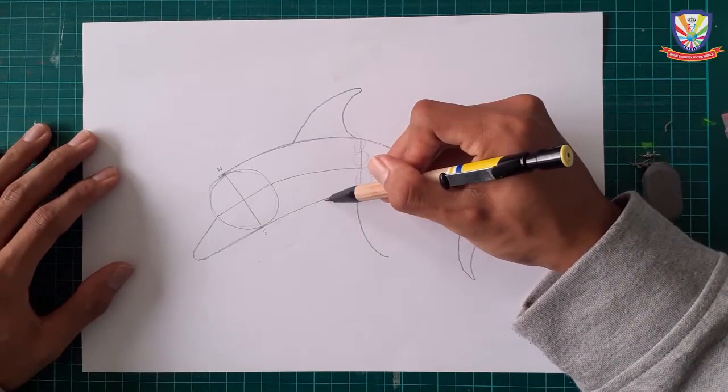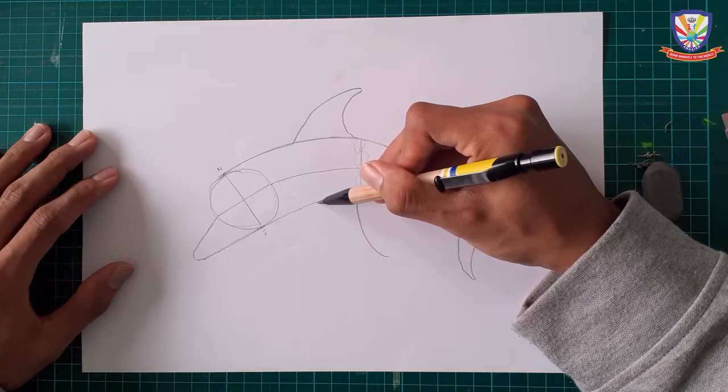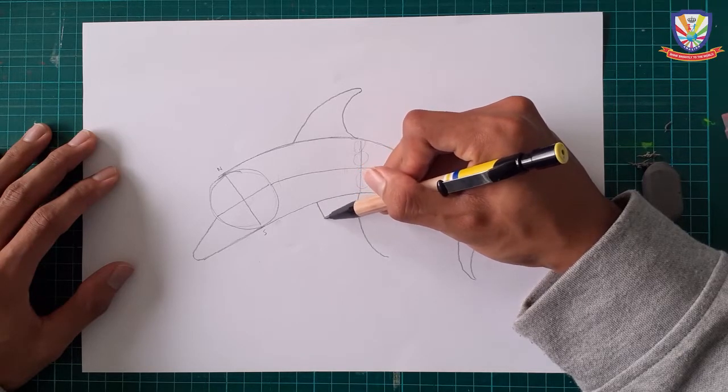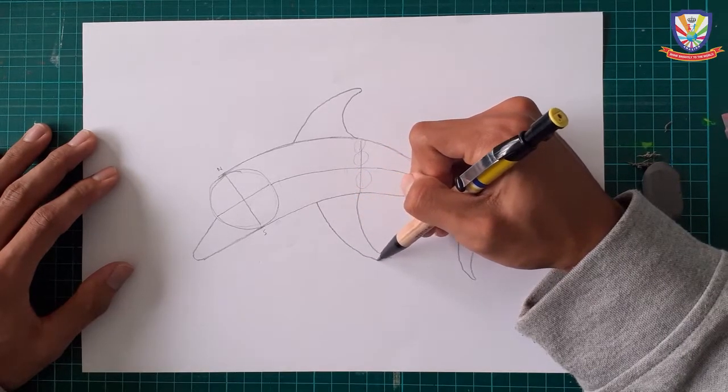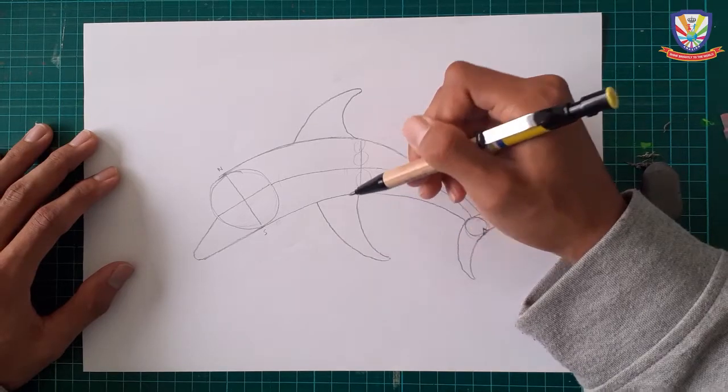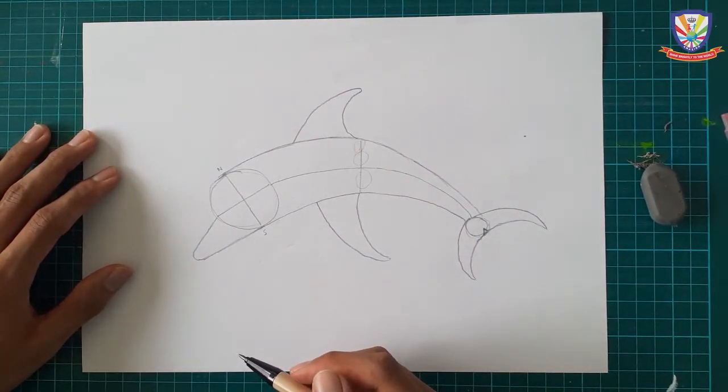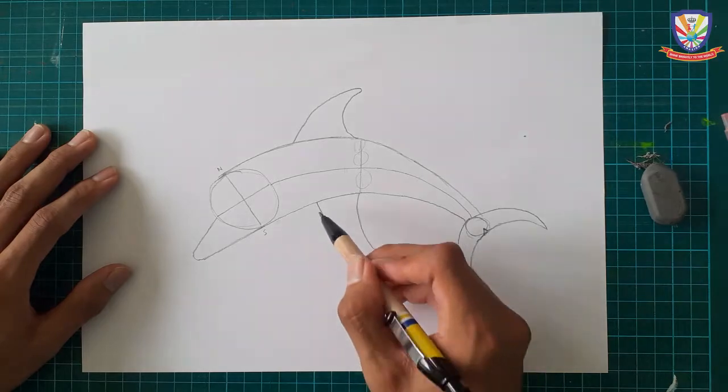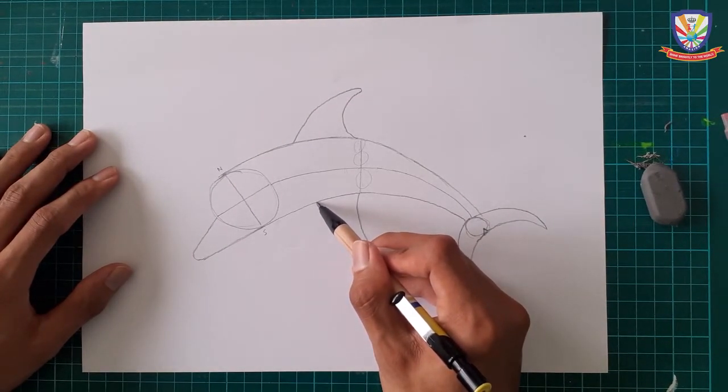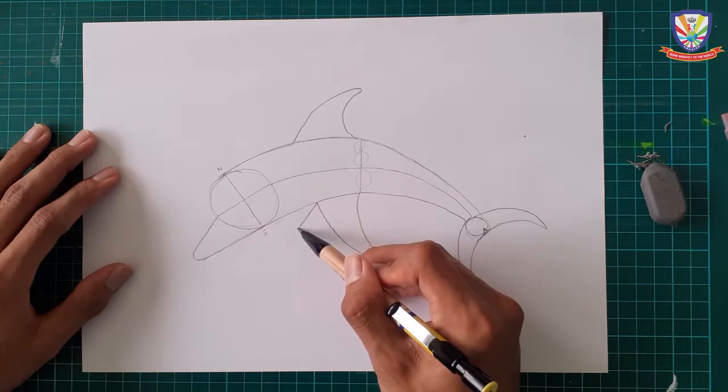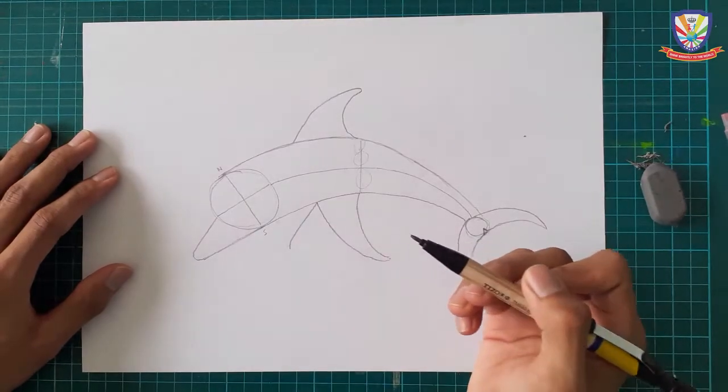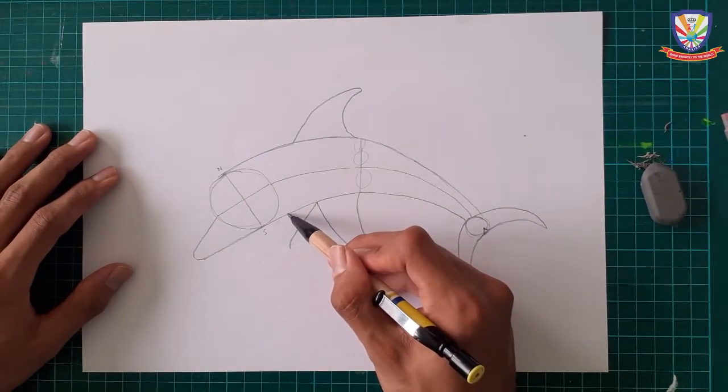After you're done, from right here, close it. After you're done with the fin, then we're going to make another one right here. This is from the side, and then close it.